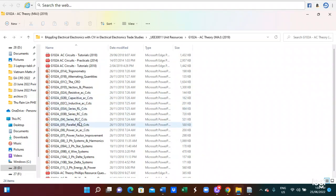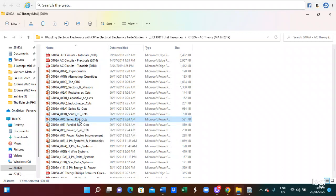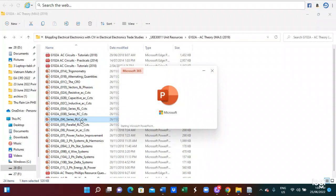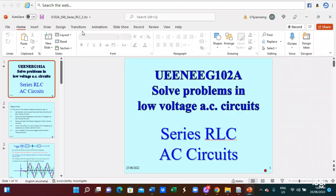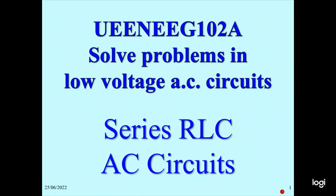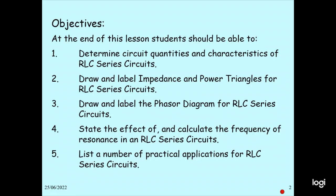This is lesson 4. You are doing lesson 4: series RLC circuit. As an end of this lesson, students should be able to determine the circuit quantities and characteristics of the RLC series circuit, draw and label the impedance and power triangle for the RLC series circuit, draw and label the phasor diagram, state the effect or calculate the frequency of resonance, and list practical applications for the RLC series circuit.